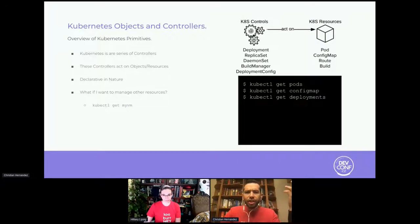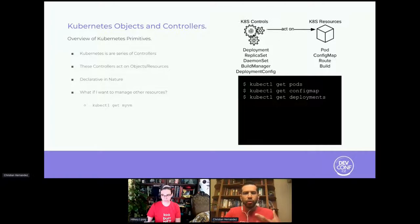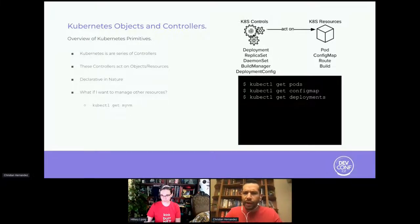These controllers are declarative in nature — a desired state versus running state paradigm. If the running state matches the desired state, it does nothing; if it's different, it tries to reconcile that difference. These primitives allow us to manage containerized workloads. But what if you want to manage other resources beyond what's in the Kubernetes API — like VMs or a database cluster? In the past you'd need to submit a proposal to the Kubernetes codebase, but not anymore.